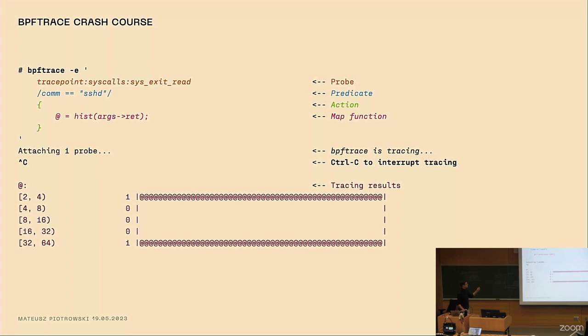And BPF Trace looks very similar. They have slightly different names. They don't call the action body an action body, it's called an action, and inside you have things. For example, map functions or aggregations. But ultimately, you also get a histogram and you can reason about your system this way.